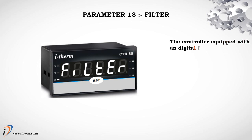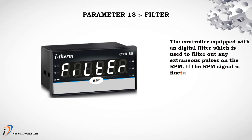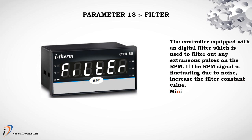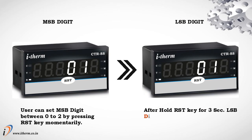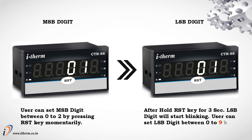Parameter 18: filter. The controller is equipped with a digital filter used to filter out any extraneous pulses on the RPM signal. If the RPM signal is fluctuating due to noise, increase the filter constant value. Minimum filter value equals 1; maximum filter value equals 20. The user can set the MSP digit between 0 to 2 by pressing the reset key momentarily. After holding the reset key for 3 seconds, the LSP digit will start blinking; the user can set the LSP digit between 0 to 9 by pressing the reset key momentarily.